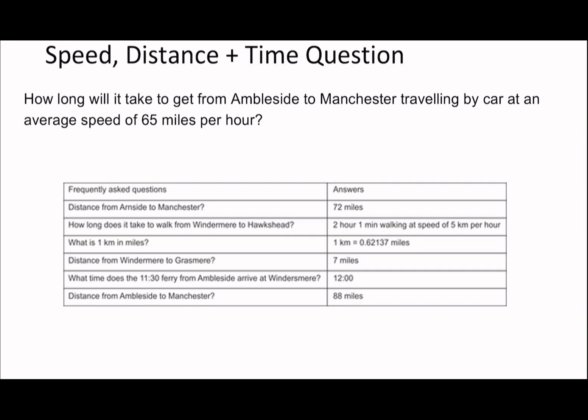Next question: How long to get from Ambleside to Manchester at 65 miles per hour? Ambleside to Manchester is 88 miles. Speed is distance over time, so 88 divided by 65 equals 1.35 hours. To convert to minutes, multiply by 60. I'm showing you how to do the conversion. These questions are from Medify, not too difficult.